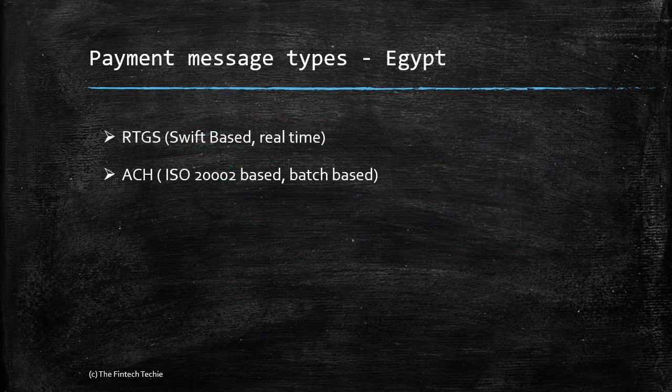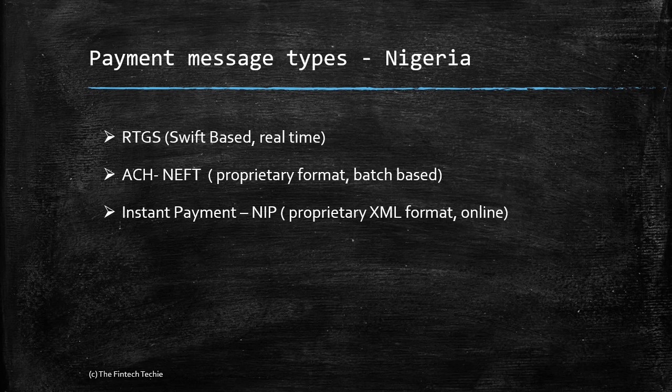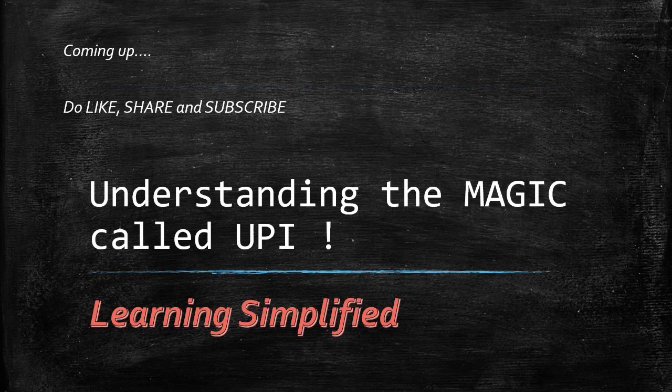For example, Egypt has adopted a SWIFT-based system for RTGS, while for domestic transfers they use ISO 20022-based batch systems. Nigeria, although they have adopted RTGS SWIFT-based systems, their ACH and instant payments use proprietary formats as prescribed by the central bank. Do like, share, and subscribe to the Learning Simplified series as we come up with more interesting scenarios of core banking. Thank you.